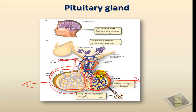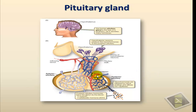Let's look first at the posterior pituitary gland. This portion of the pituitary gland is nervous by nature — it consists of nervous tissue. It does not produce any hormones at all. The hormones that are released from the posterior pituitary gland are produced in the hypothalamus, and from there they are transported through axons and released directly into the bloodstream, into blood vessels.